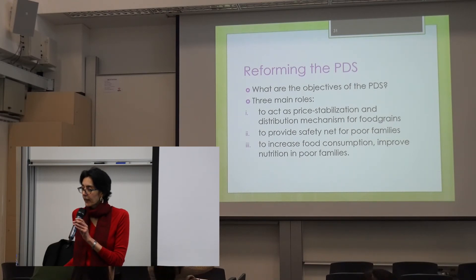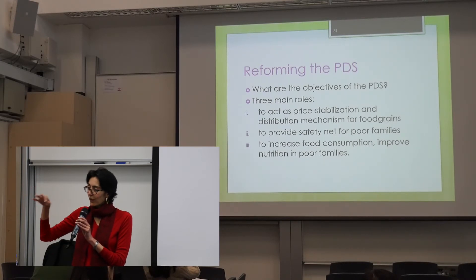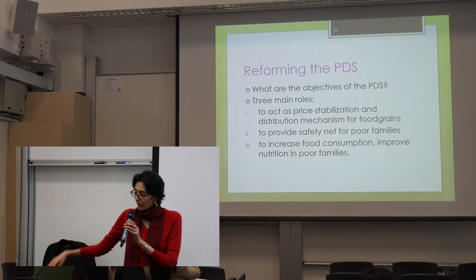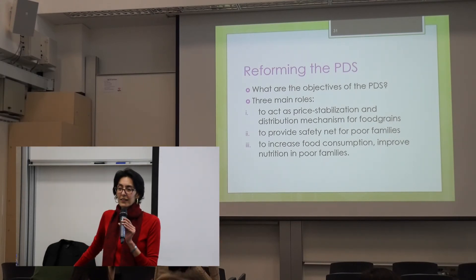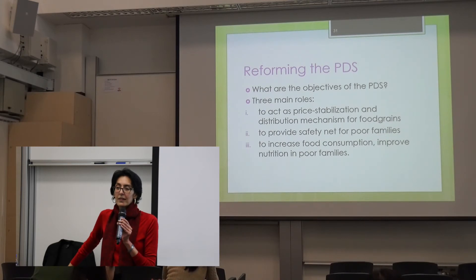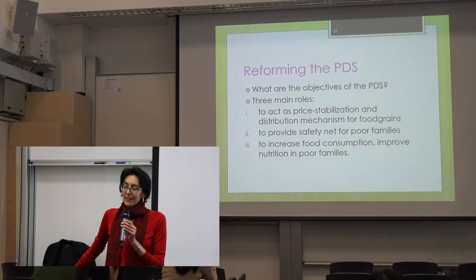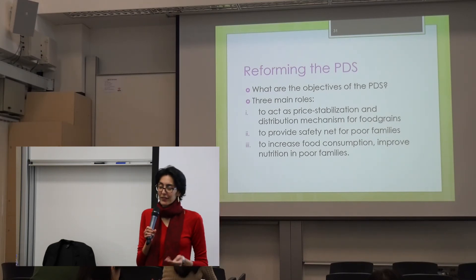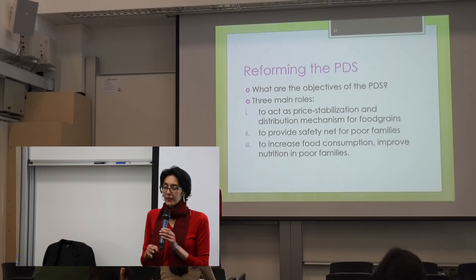Q: What's happening on the supply side — is the government buying these grains? There are minimum support prices, so there's a whole agricultural purchase policy in place to support farmers. And there's also the broader issue of the 55% of grain that's being diverted — that seems to be really massive. What efforts are being made to clamp down on that? A: Some states are better than others. It does seem to be an issue of political will.